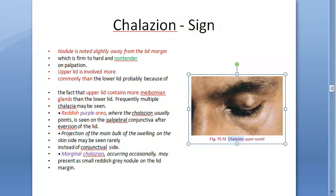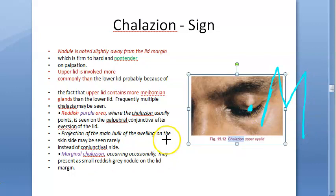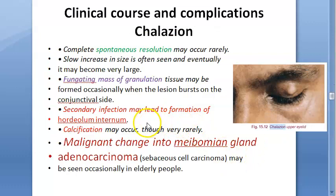If the secretions accumulate near the lid margin, it is called a marginal chalazion. You should differentiate it from a stye because styes do not involve the meibomian gland, whereas chalazion specifically involves the meibomian gland.